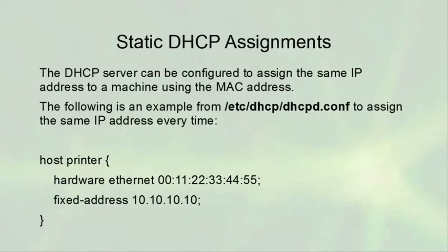In addition to giving out a range of addresses, you can assign static addresses. The DHCP server can assign the same IP address to a machine using its MAC address. This is common where a machine must come up with the same address every time because it provides services. For example, assigning a printer with MAC address 00:11:22:33:44:55 a fixed address of 10.10.10.10, placed inside the subnet section so it still gets router and DNS information.